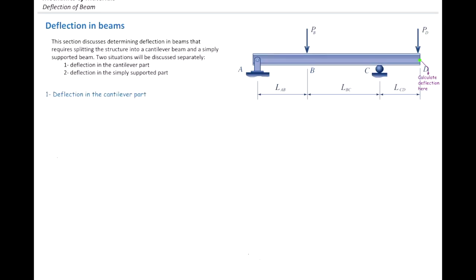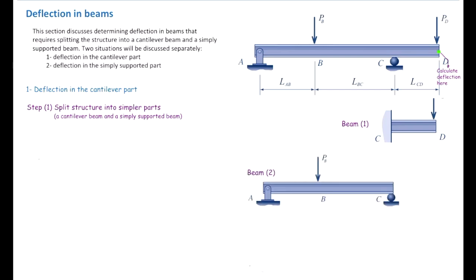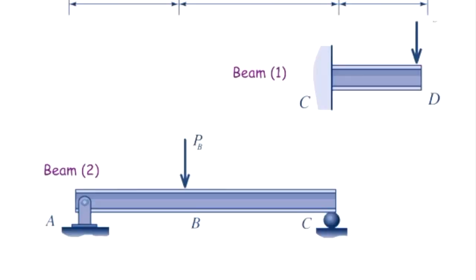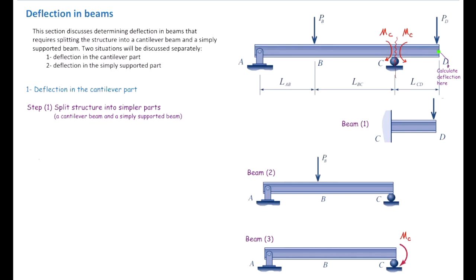For case one — determining deflection in the cantilever part — the first step is splitting the structure into simpler parts: a cantilever beam and a simply supported beam. In the simply supported beam, apply all external forces acting on it one by one, and do not forget the effect of the internal moment. This is a very common mistake — also consider the internal force that passes from the cantilever beam to the simply supported beam.